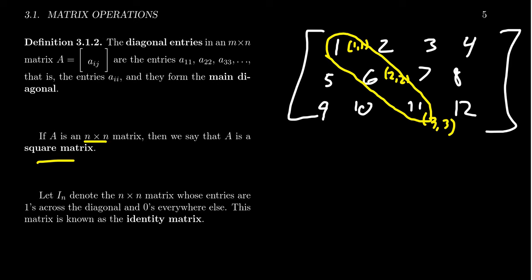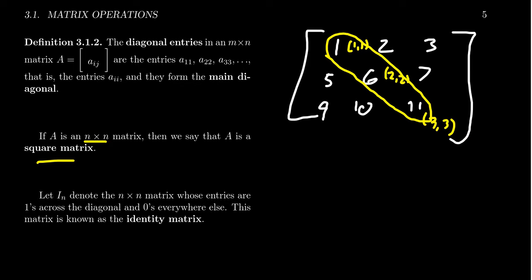So to take the example we have here, if I just take off the last column and draw it again, this is now an example of a square matrix.